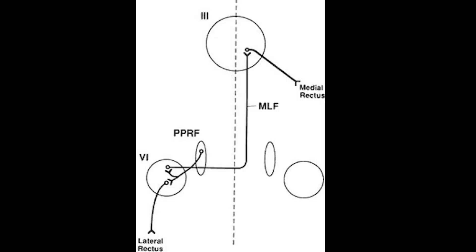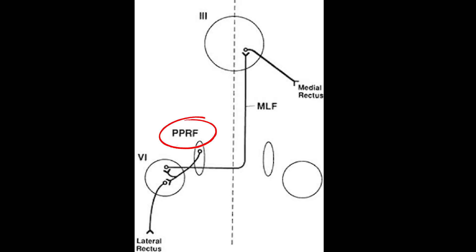So the right FEF activates the left PPRF, which has a name, but I don't think it's relevant and it's long and I don't want to say it. So PPRF it is. And this activates the abducens nuclei, or cranial nerve six, to tell it to look whatever direction you need to look.